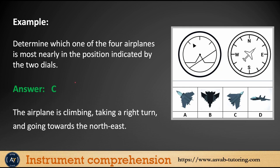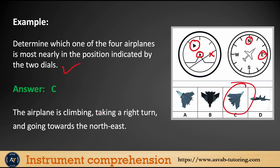Let's do some practice examples. Determine which of the four airplanes is most nearly in the position indicated by the two dials. The index is on the left side, which means the aircraft is taking a right turn and heading Northeast. The miniature aircraft is above the horizon, which means it is climbing. So the correct answer is C — the aircraft is climbing, taking a right turn, and going towards the Northeast.